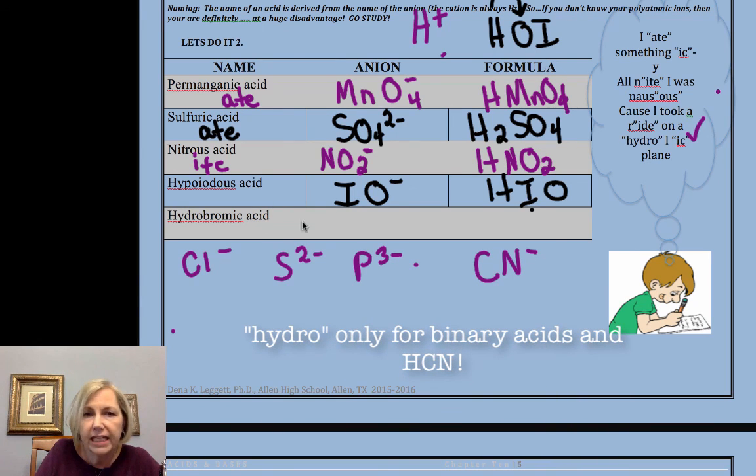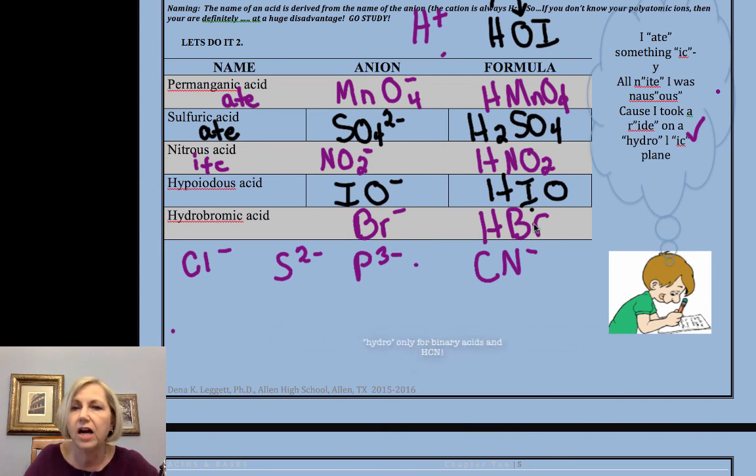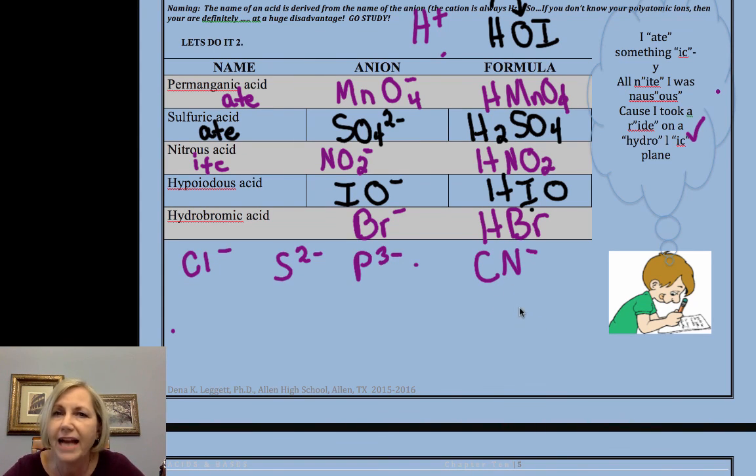All right. And then hydroic came from -ide. That is a binary acid. That means only two elements, cation H+, anion Br-. I know that was fast. You've done this before, and there will be more time to practice.